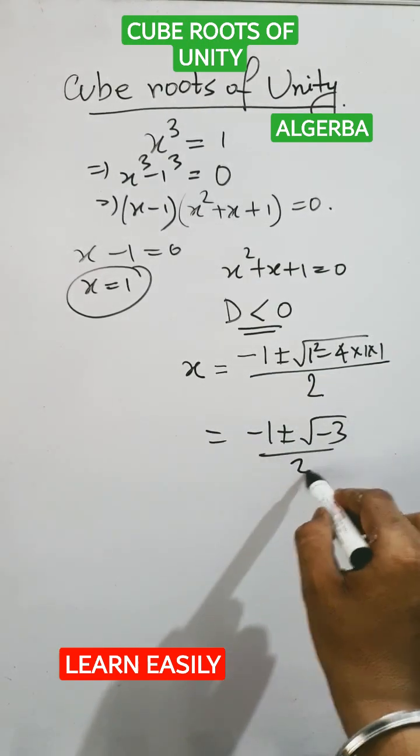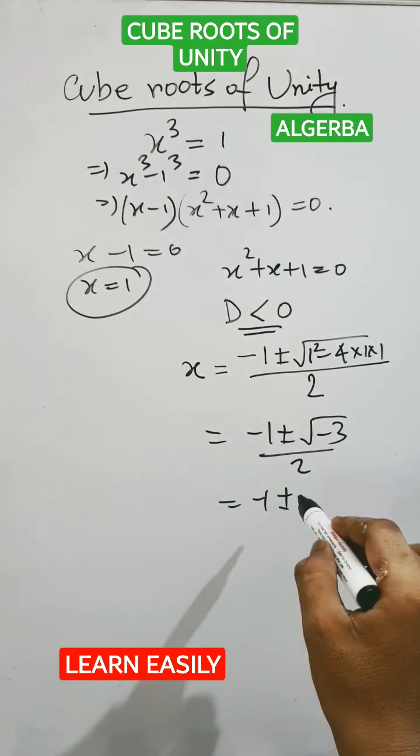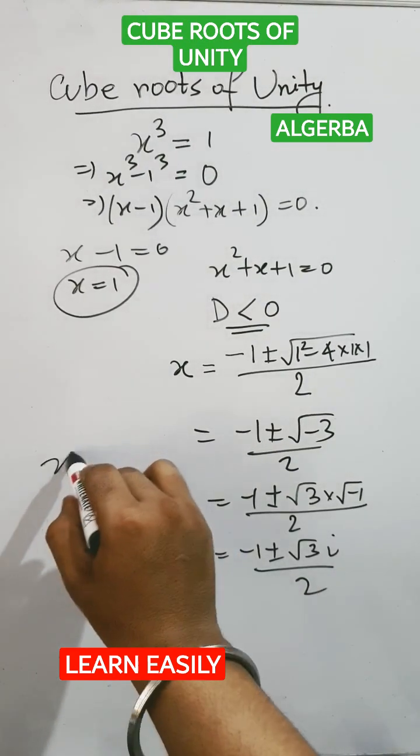Minus 1 plus minus root over minus 3 by 2. This we will get here, x equals minus 1 plus minus root over minus 3 by 2.